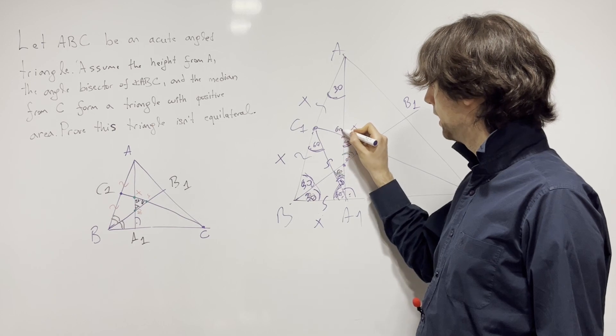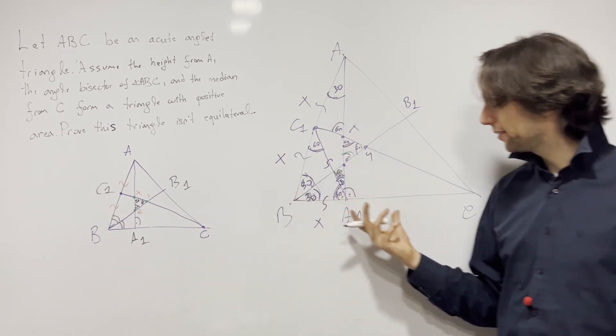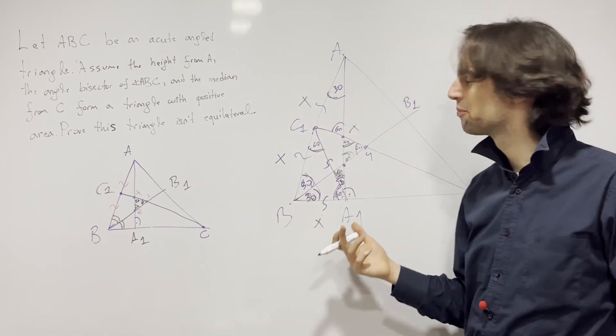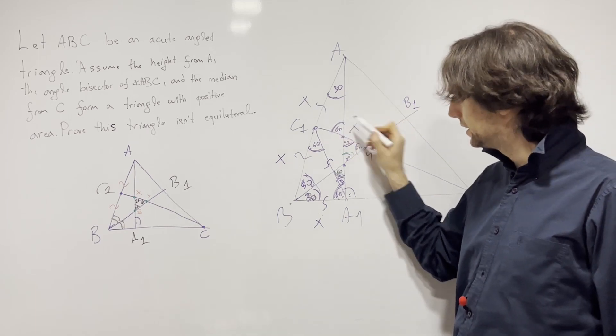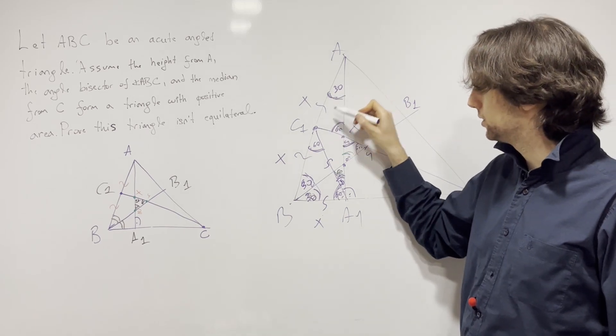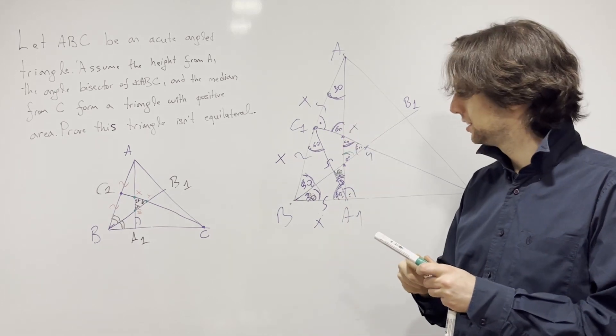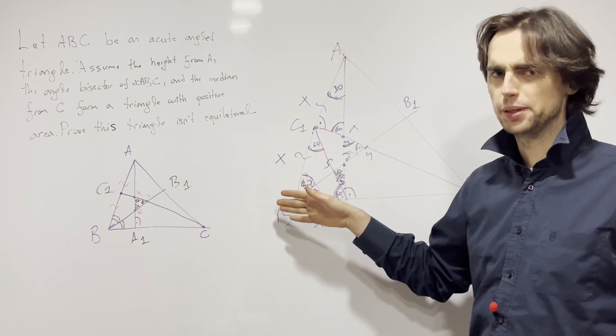And the answer for me is the next thing I see is: wait a second, this is 60 and this angle is 60. I sort of think I've maxed out here, how will I ever use that? And I go okay, well this is 60 because this is 60 and this is 30, so it means that this angle right here is 90. So we have that CC1 is perpendicular to AB.